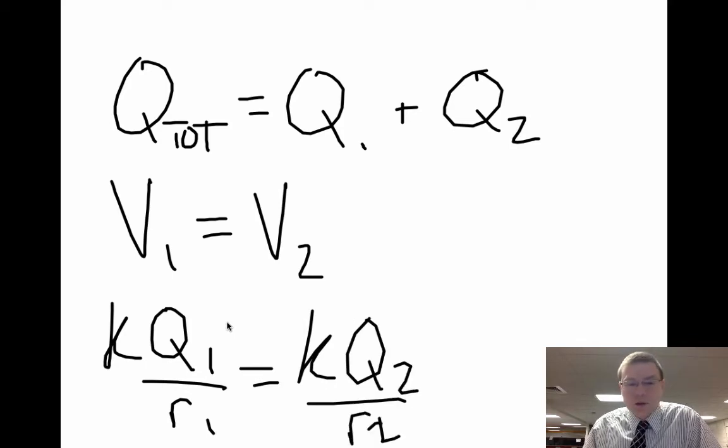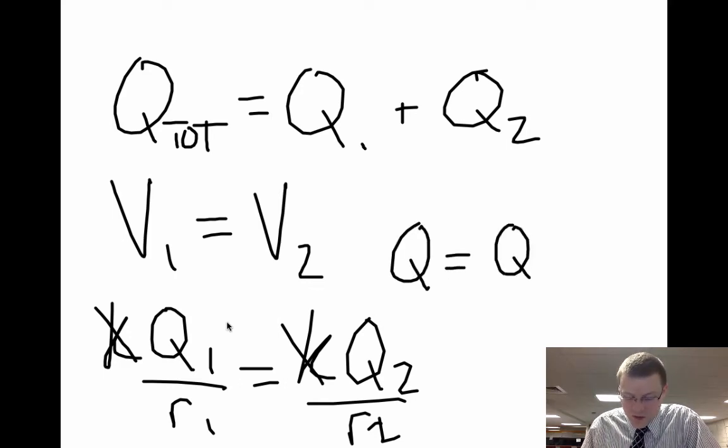The nice thing is that there's a coulomb constant on both of these, so I can eliminate that. And I can solve for charge 1 or charge 2 in this case, it doesn't really matter. Let's solve for charge 1.